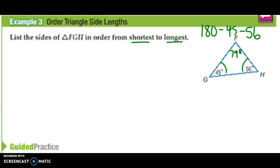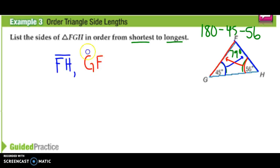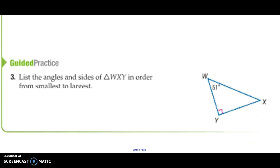Now that we know all three angles, we can find the corresponding sides. The smallest angle is angle G at 45 degrees, so the shortest side across from it is FH. The next biggest angle is angle H at 56 degrees, and its corresponding side is GF. The largest angle is angle F at 79 degrees, and its corresponding side is GH. So the sides in order from shortest to longest are: FH, GF, GH. Here's a guided practice problem — feel free to stop and try this one. Note that angle Y is 90 degrees.